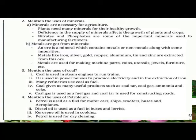Metals are got from minerals. An ore is a mineral containing a metal or non-metal along with some impurities. Metals like iron, silver, gold, copper, aluminum, tin and zinc are extracted from ores. Metals are used for making machine parts, utensils, grills, furniture, etc.